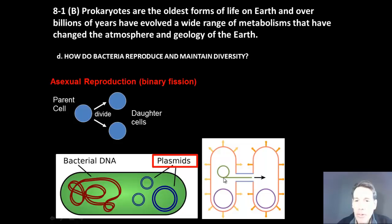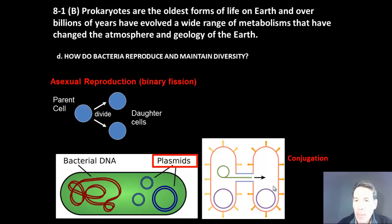It can copy the plasmid and give it to a recipient cell, allowing both cells to now be resistant. That process is called conjugation, or a swapping, or a copying and trading of genes.